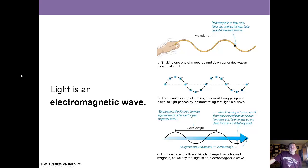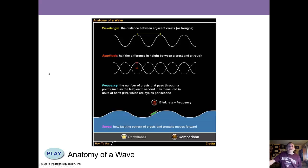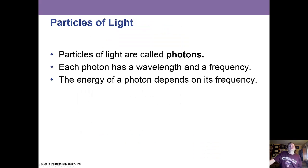Light is an electromagnetic wave. The wavelength is defined as from one peak to another peak. Frequency is how many waves go through a certain period in one second. Particles of light are called photons. Each photon has a wavelength and a frequency, and the energy of a photon depends on its frequency.